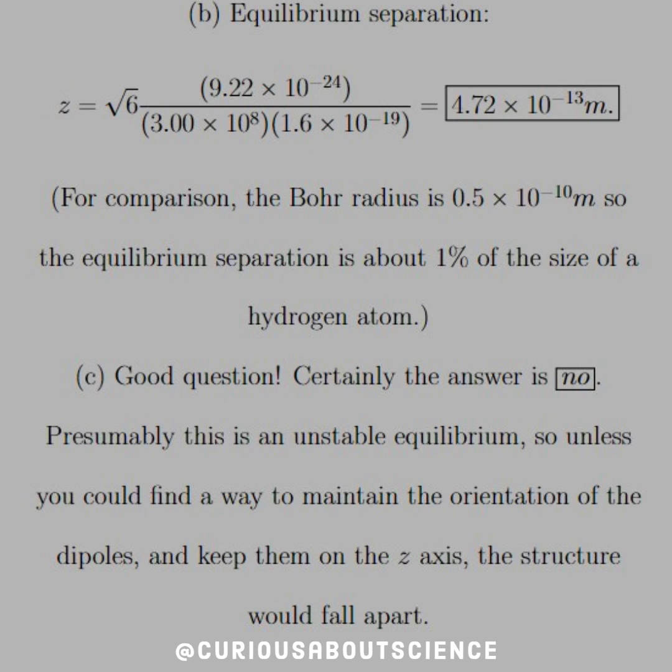So then, if we plug in these constants, we can find what the equilibrium separation is. Go ahead and do that, and we see that we have 4.72 times 10 to the negative 13 meters. And for comparison's sake, the Bohr radius is 0.5 times 10 to the negative 10 meters. So the equilibrium separation is about 1% of the size of a hydrogen atom.